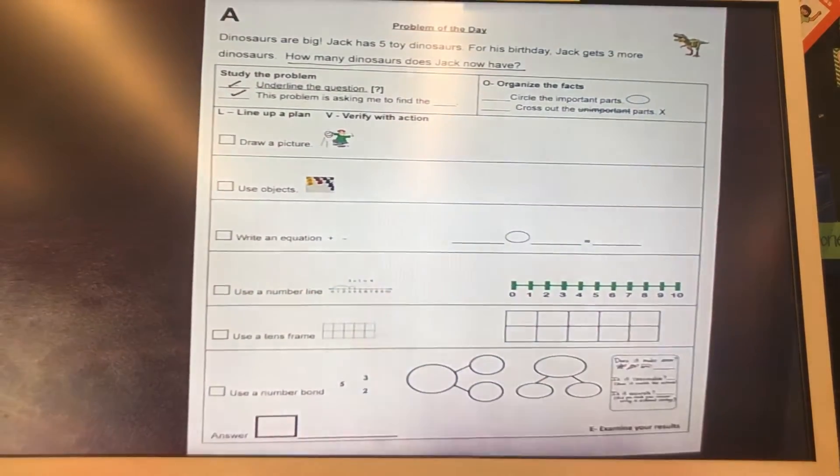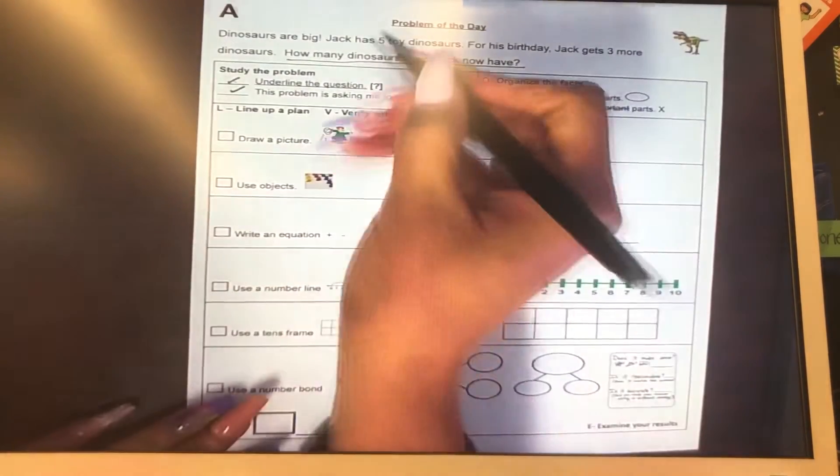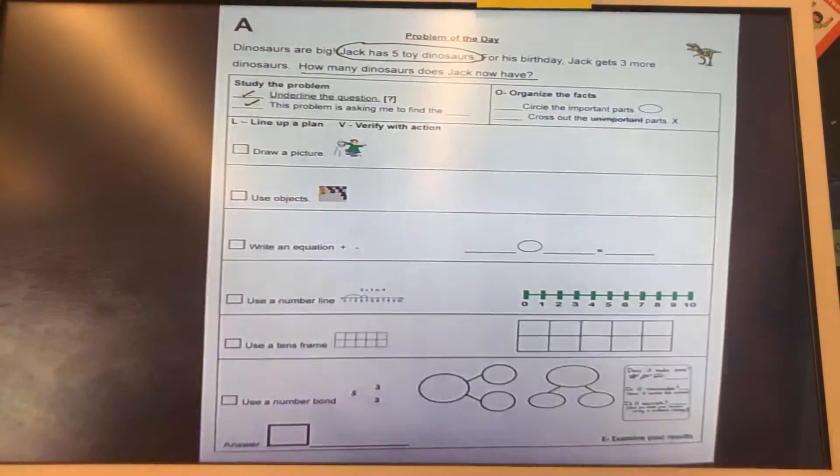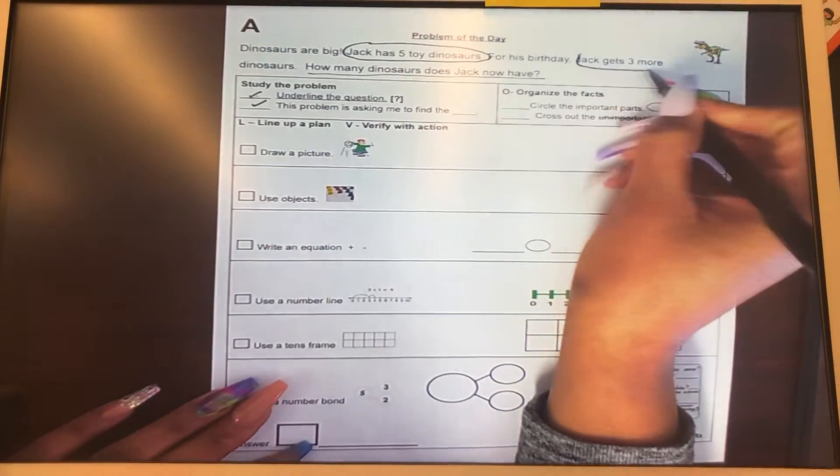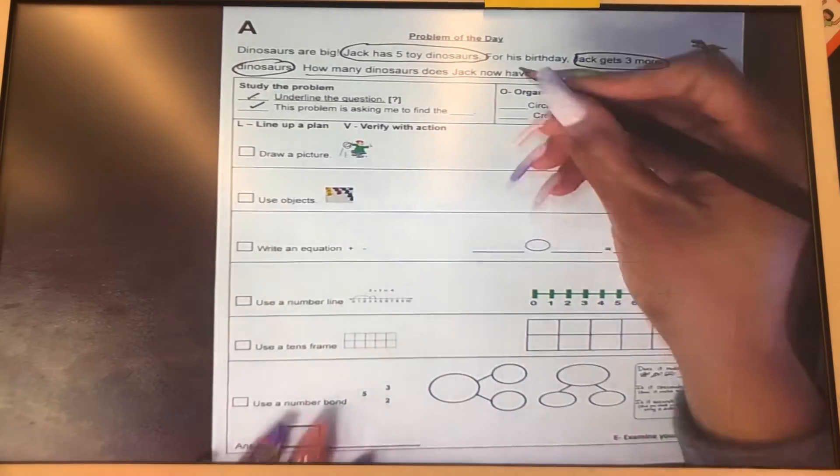We need to circle the important facts. So we know that Jack has five toy dinosaurs. We're going to circle that. And we also know that Jack gets three more dinosaurs for his birthday.